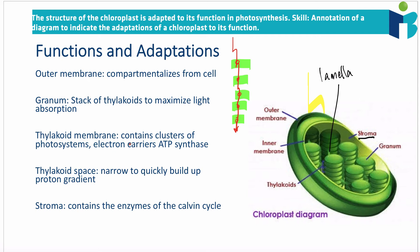The thylakoid membrane is adapted because it contains clusters of photosystems, which are used in the light-dependent reactions, along with those electron carriers also in the light-dependent reactions, and ATP synthase to generate the ATP needed for the light-independent reactions.